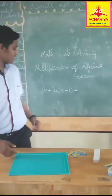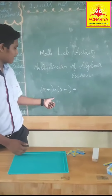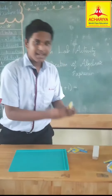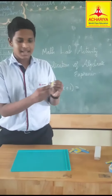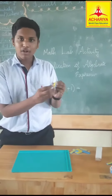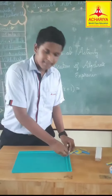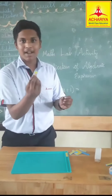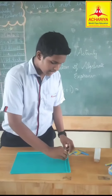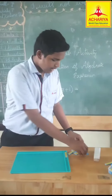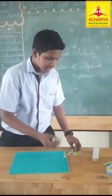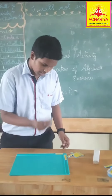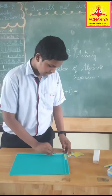My question is (x + 1) into (x + 1). I am taking the tile with the value of x and I place it here. And I am taking the value of one tile and I place it here. And I am taking the same x tile and I place it here, and one tile.